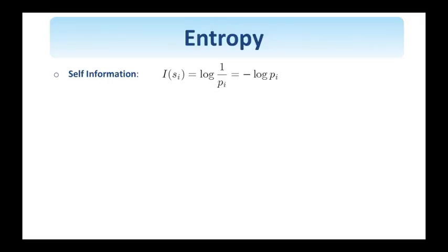So, this is the self-information of the symbol s_i, equal to the log of 1 over its probability, which is also clearly equal to the minus log p_i. So, if I look at the log function, it looks like this. It goes through 1.